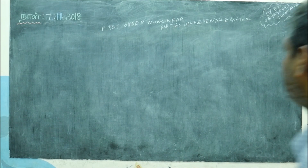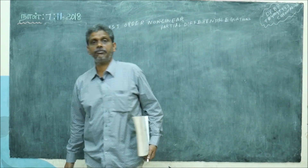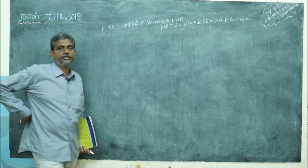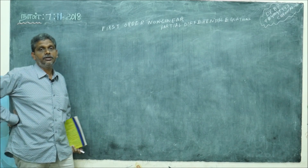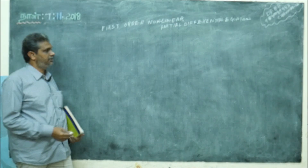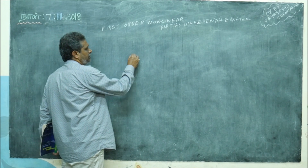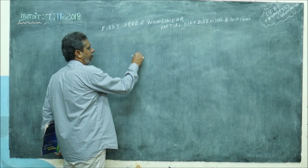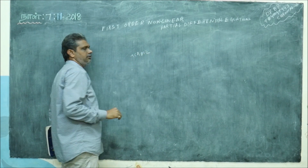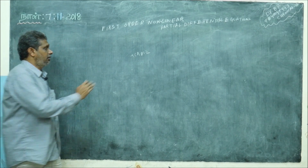For first order non-linear partial differential equations, Type 1, we did some problems — how the function contains only p and q. Now we go for the second type. For Type 1, just remember: f of p comma q is equal to 0, then you know the complete integral. There is no x or y there.